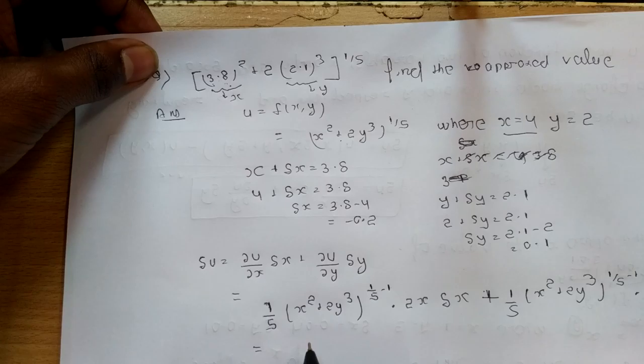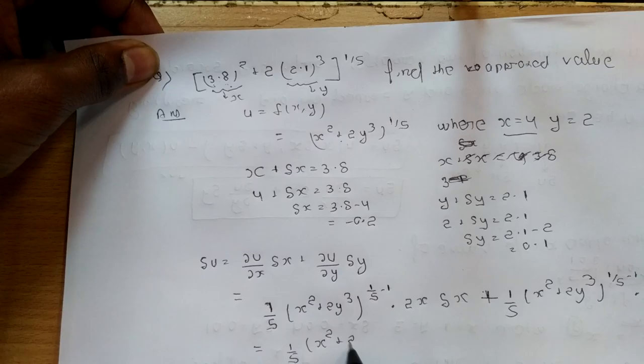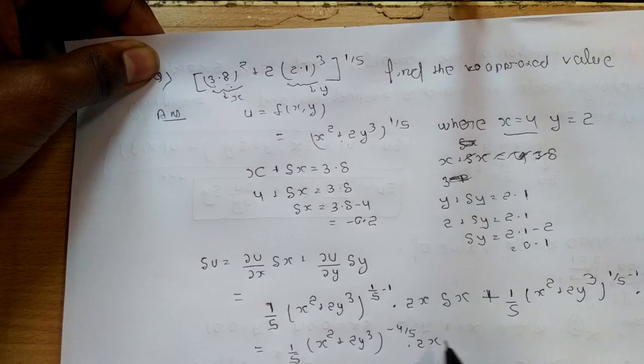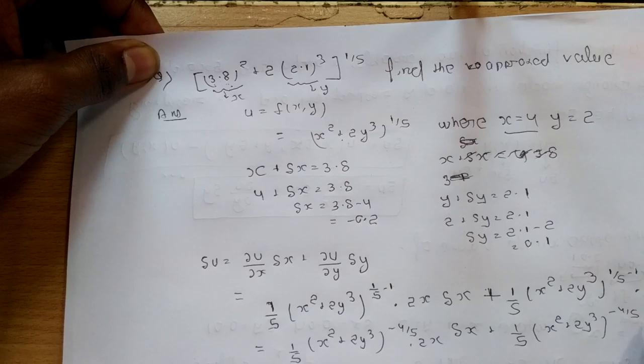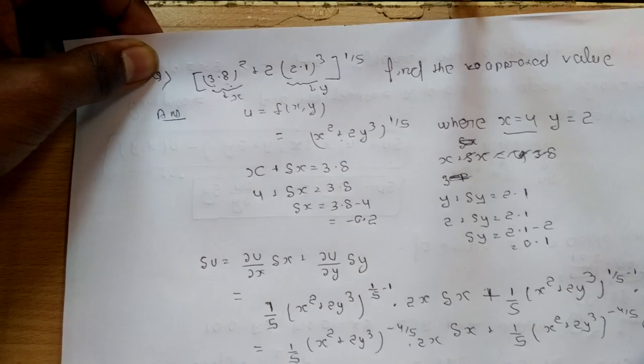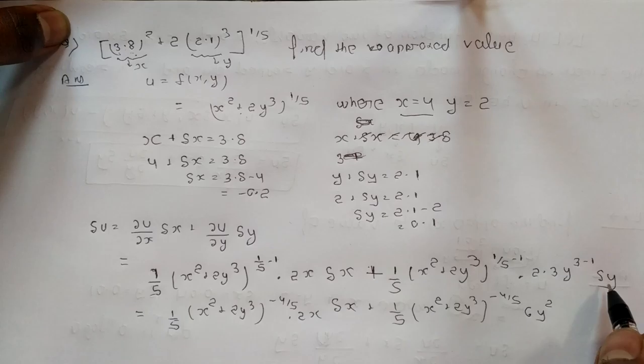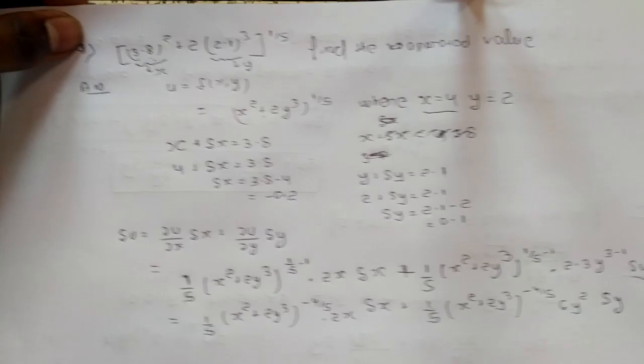Result लिखे तो: (1/5)(x² + 2y³)^(−4/5) · 2x · Δx + (1/5)(x² + 2y³)^(−4/5) · 6y² · Δy. यहाँ पर Δy छूट गया था — यहाँ Δy लिखना है।